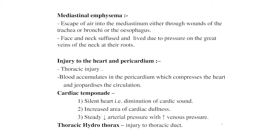Injury to the heart and pericardium: in thoracic injuries, the heart may be injured — for example, by a penetrating wound. Blood accumulates in the pericardium, compressing the heart and jeopardizing the general circulation — this is called cardiac tamponade. The three classical signs of cardiac tamponade are: silent heart (diminution of cardiac sounds), increased area of cardiac dullness, and steady fall of arterial pressure with gradual rise of venous pressure. Treatment: immediate aspiration of the pericardium through the left costo-xiphoid angle — this is a life-saving measure.